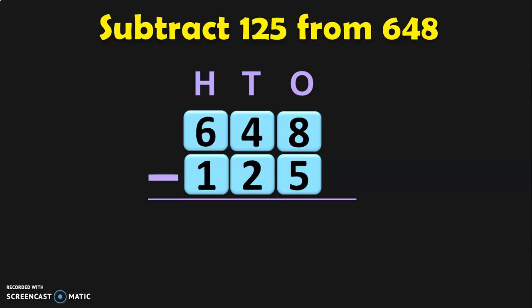Eight minus five: eight in the mind, five in the fingers — before eight: seven, six, five, four, three. The answer in the ones place is three.